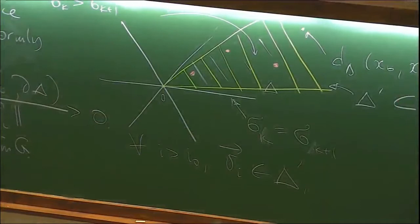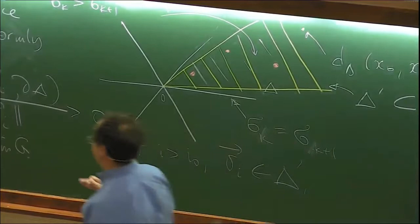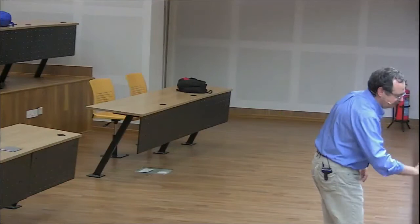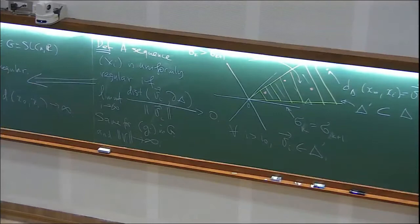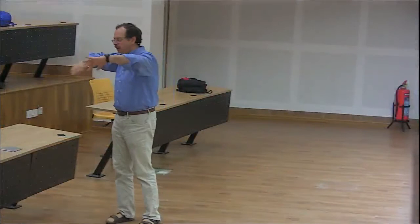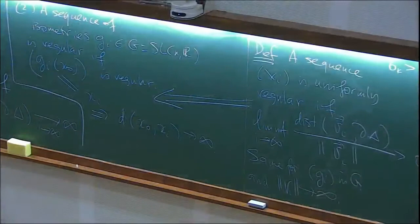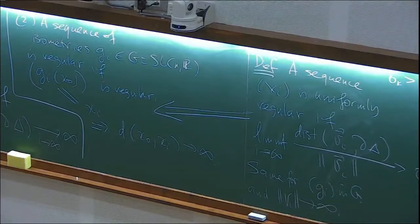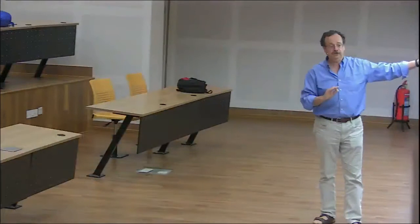There are some questions where we don't know whether a given theorem is true under one assumption versus the other. There is no complete understanding of when one should impose this condition versus that condition. Now I want to discuss the convergence property. The slogan is that there is an analog of the convergence property, but you have to assume something about the sequence beyond just diverging to infinity. We'll have convergence property for this type of sequences.